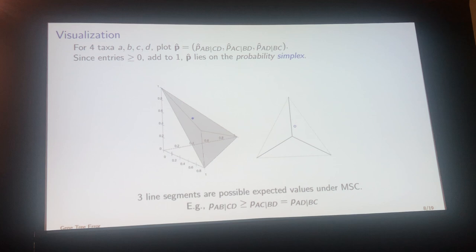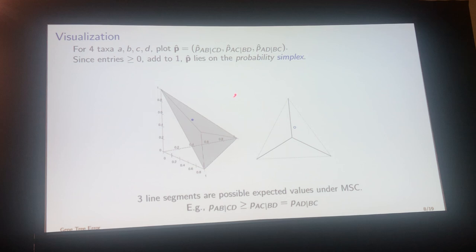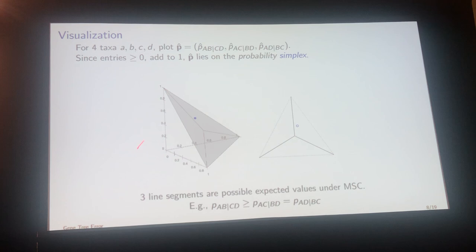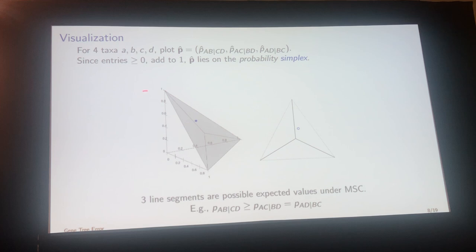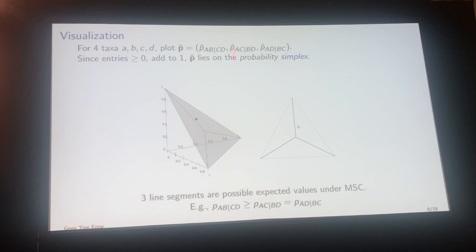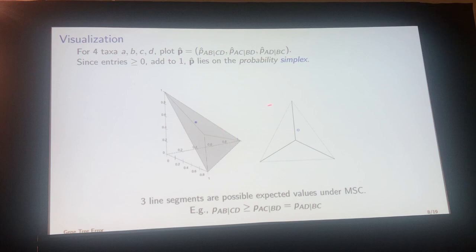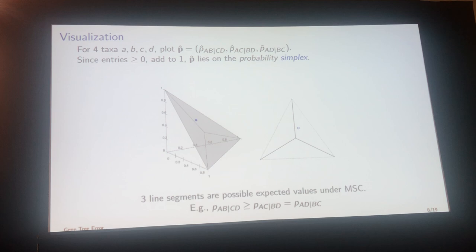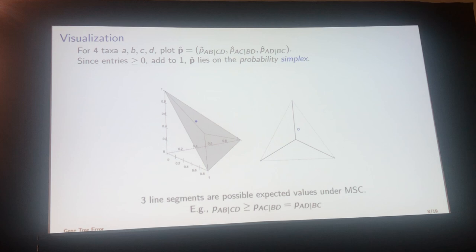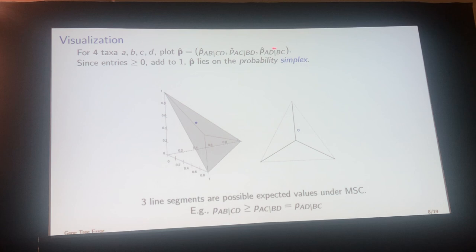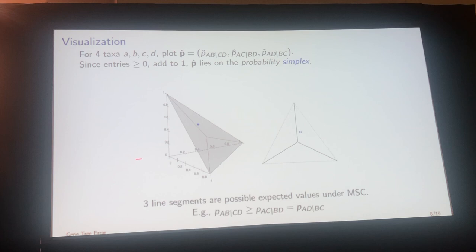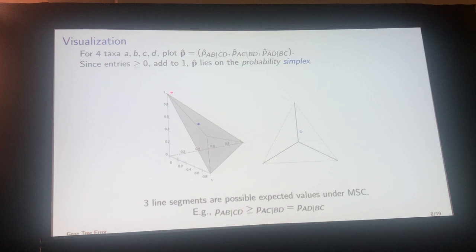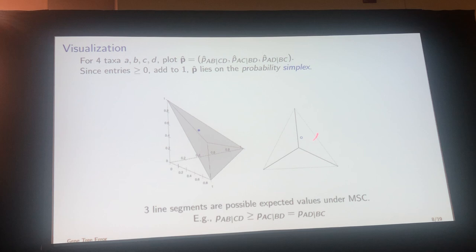Since I have three positive numbers that add up to one, if I plot them in three-dimensional space they lie on a triangle — the probability simplex. I'll view that triangle face-on. The three corners correspond to one of the three quartets having probability one. The center point where the three lines meet is one-third, one-third, one-third. The three line segments I've drawn each correspond to points where one probability is the largest and the other two are equal — which is exactly the prediction of the multispecies coalescent.